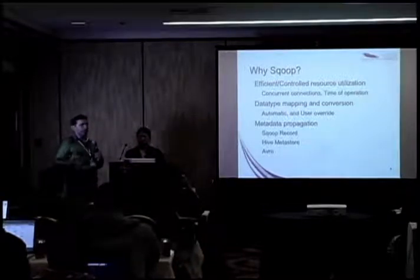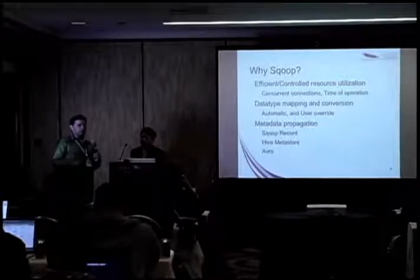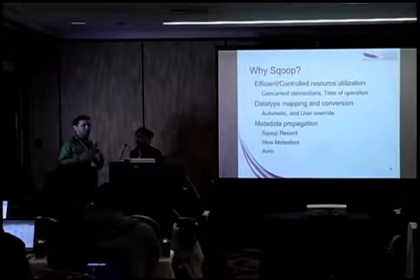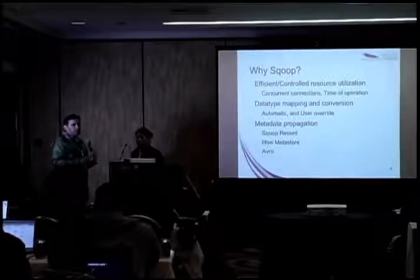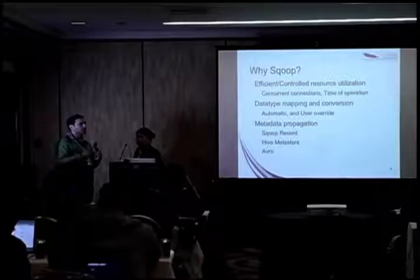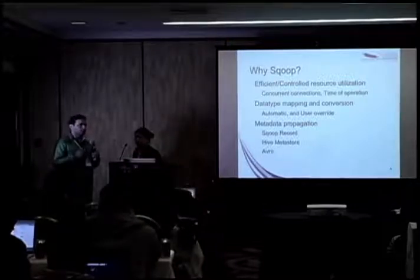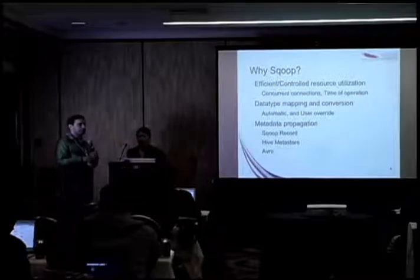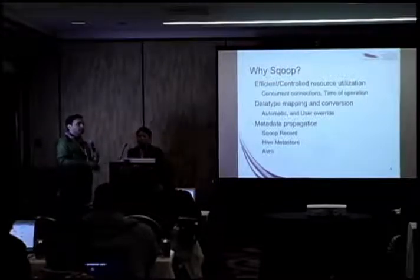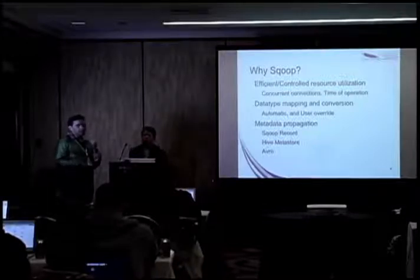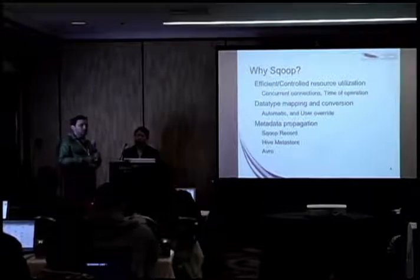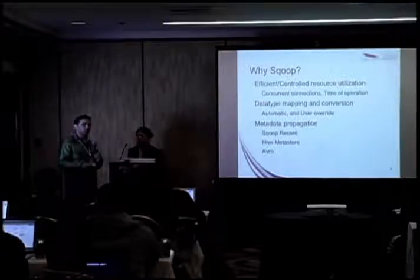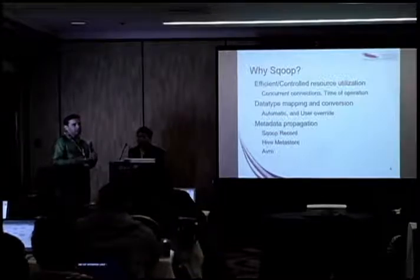For example, if you have an Oracle database with a number data type in a specific column and you'd like that expressed as a different data type within Hadoop, doing that manually would require considerable labor. What Scoop does is — you run a command, it understands the type system, it has intelligent default mappings and you can override them — it populates the data into Hadoop, maybe creates a table in Hive for you, all while utilizing maximum network capacity and giving you the ability to control when to run that load in a high-performing manner.